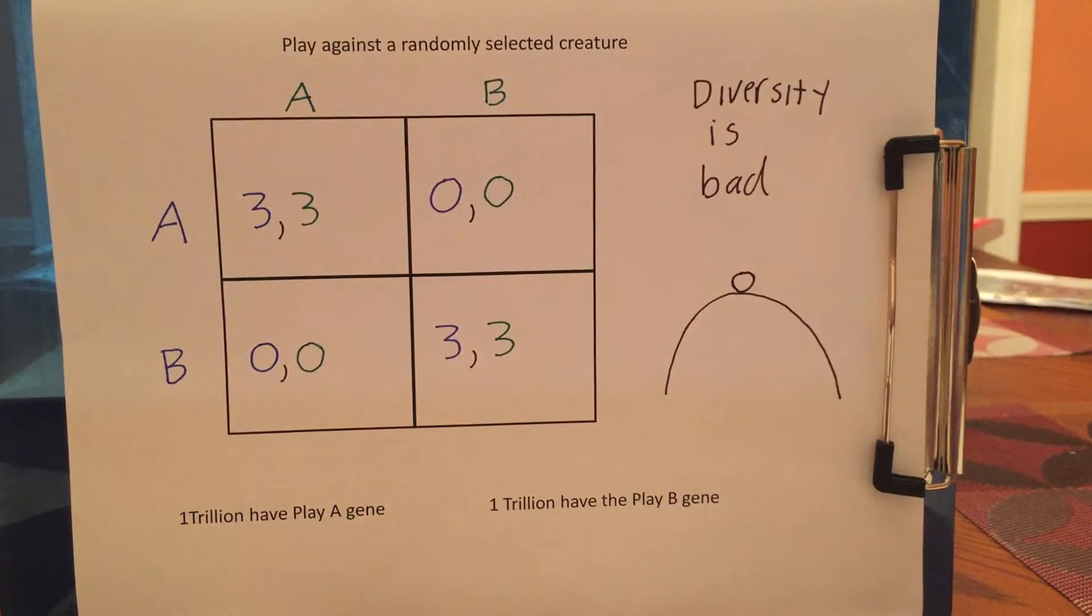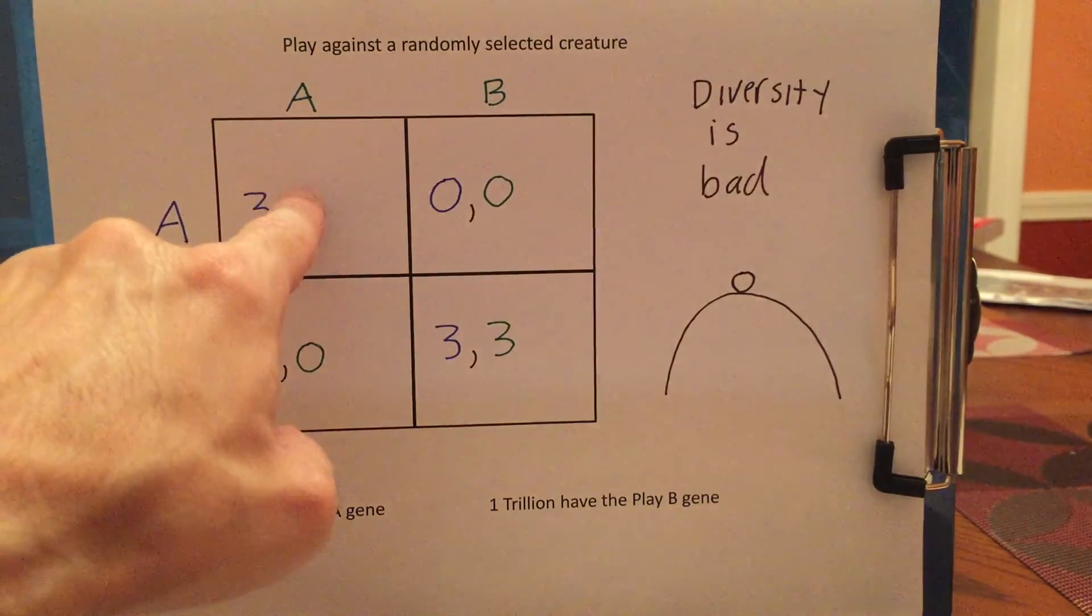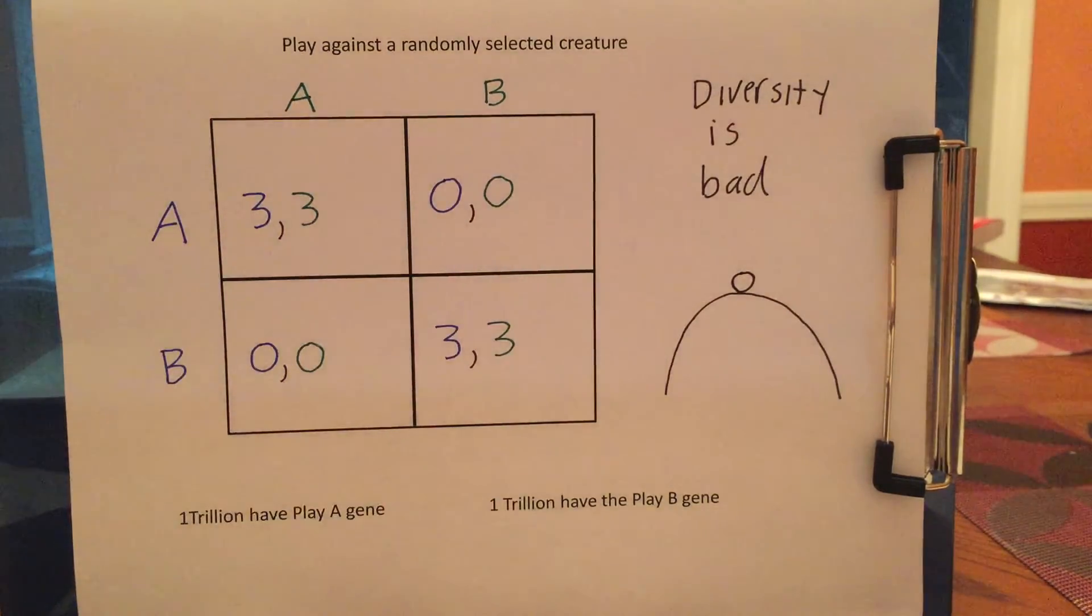Because if everyone is B except for a few mutants, most of the Bs will play against another B and get three, but most of the mutants will play against a B and they'll get zero. So this Nash equilibrium is stable and this Nash equilibrium is stable.